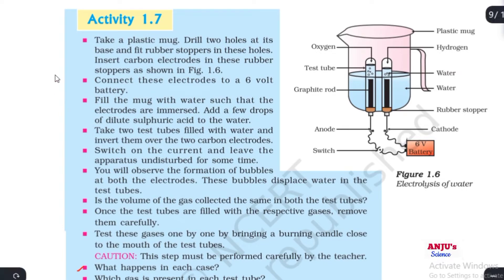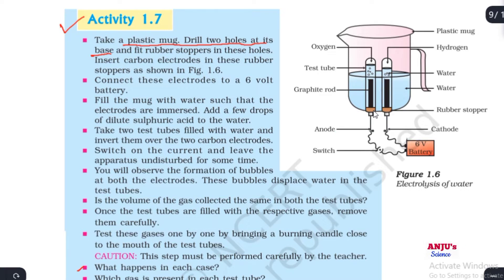Today we will do activity 1.7, class 10, chapter number 1. In this activity, take a plastic mug and drill two holes at its base, then fit rubber stoppers in these holes. Insert carbon electrodes into these rubber stoppers — the carbon electrodes are now fitted in these holes.